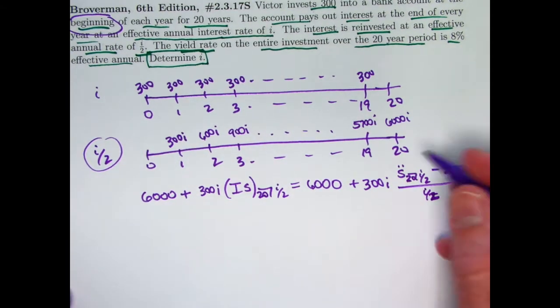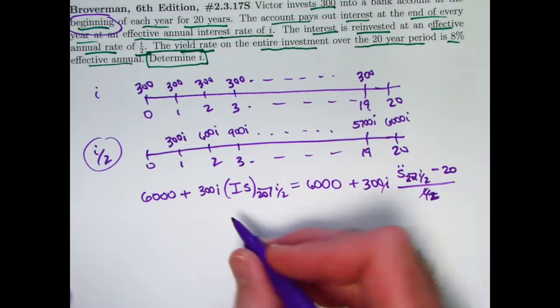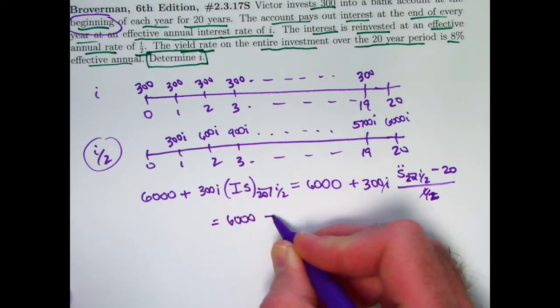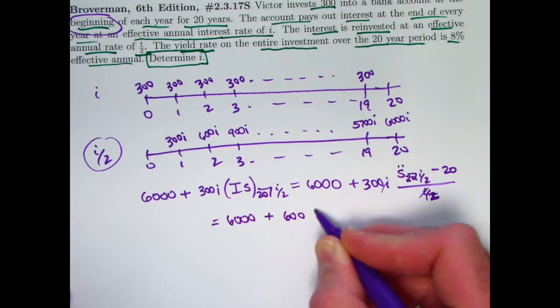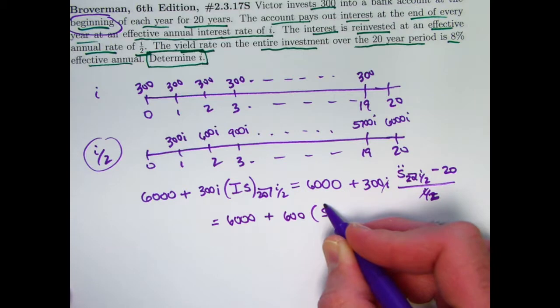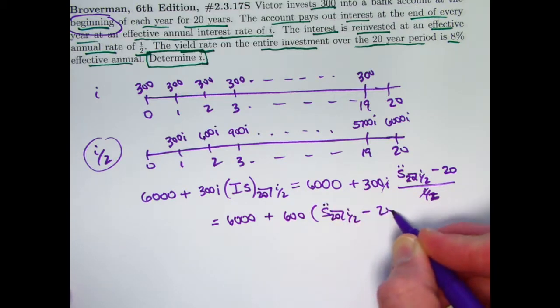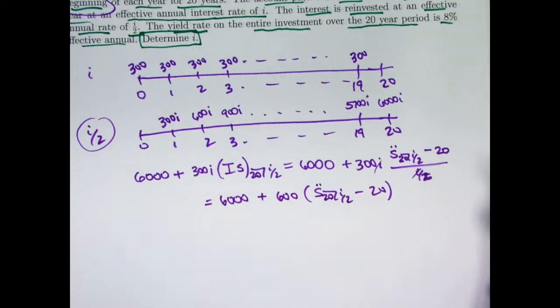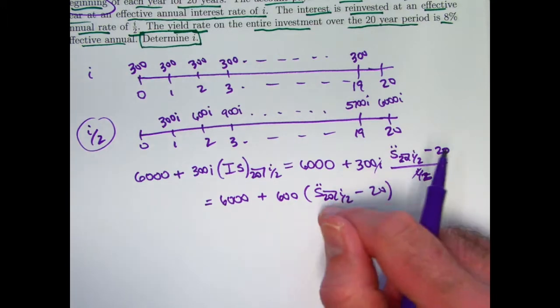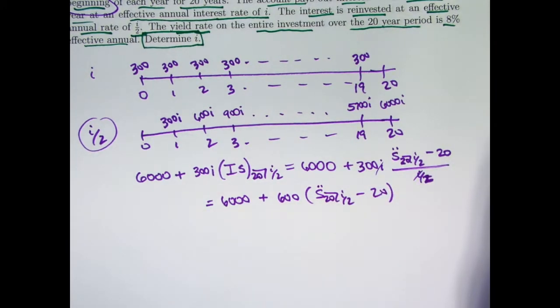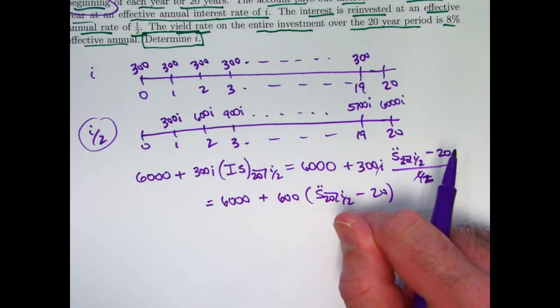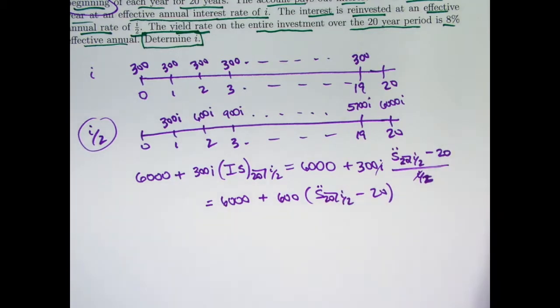We can continue to simplify. This i cancels with this i. 300 divided by 1 half is 600. We can write this as 6,000 plus 600 s double dot sub 20 i over 2 minus 20. And I can continue simplifying if I wanted to. I'm actually not going to simplify it more than this. I'm ultimately going to solve for this future value of an annuity due before I solve for i.